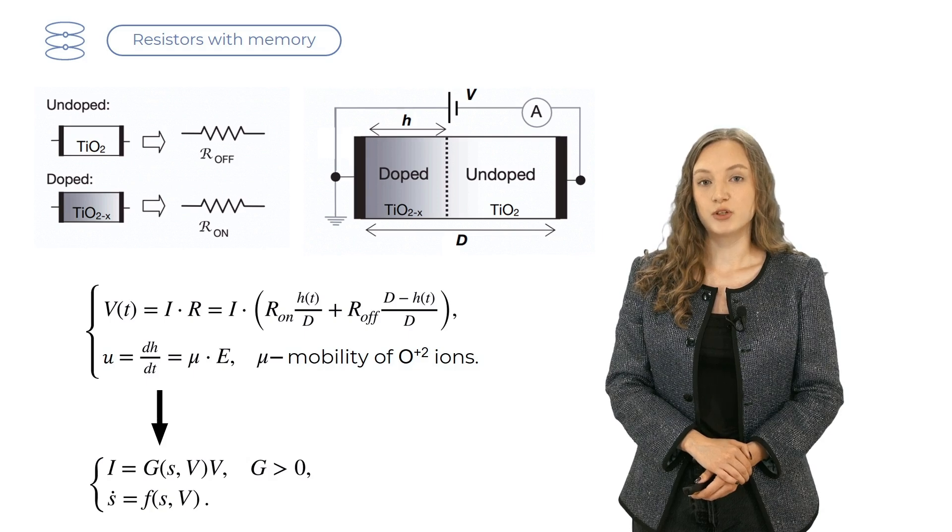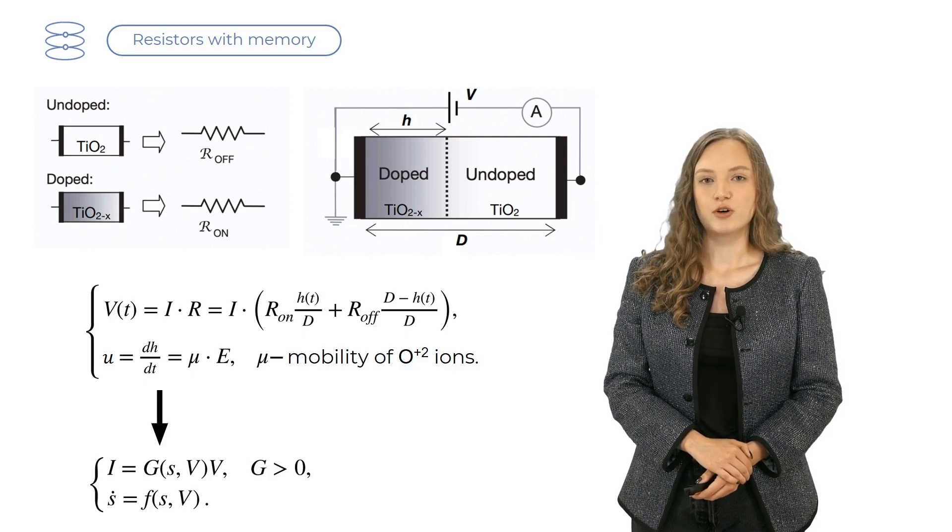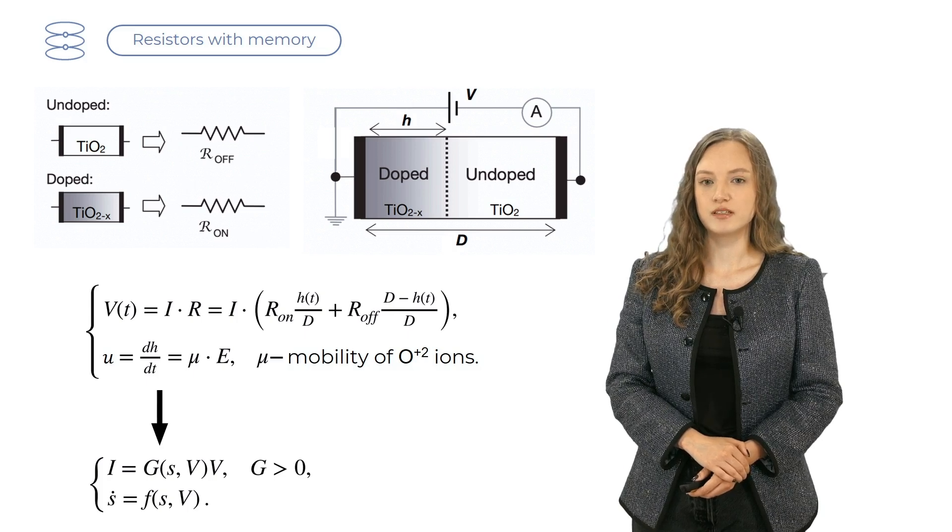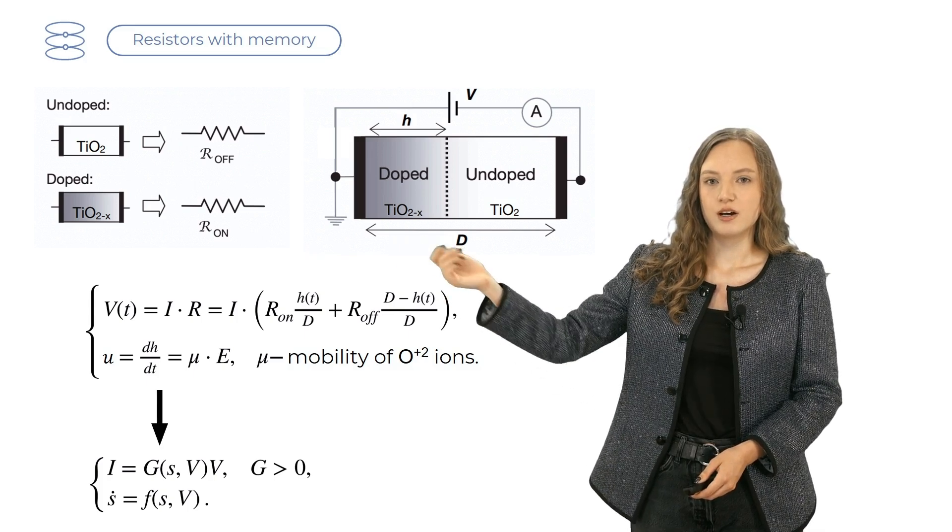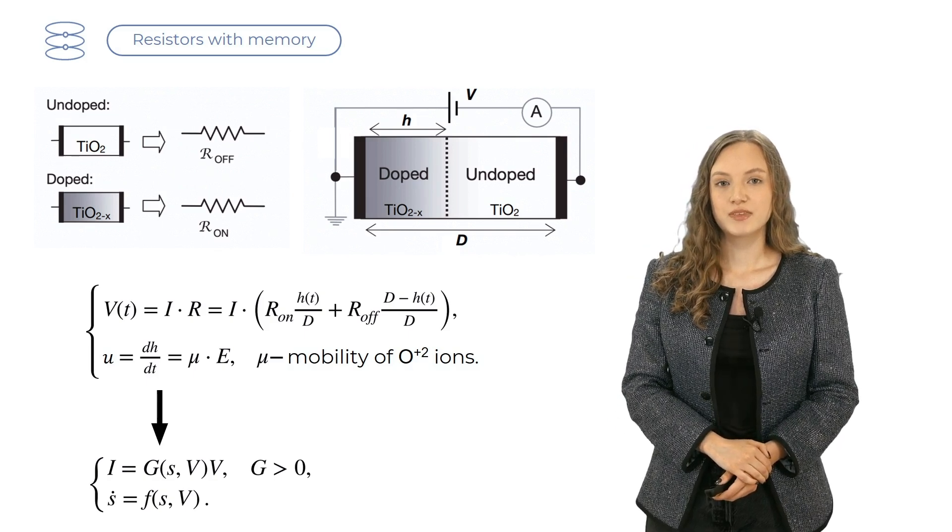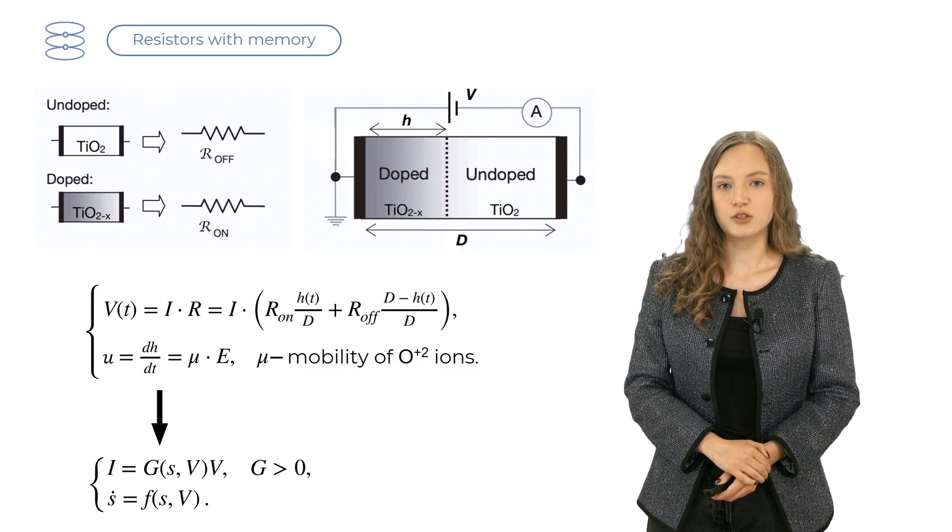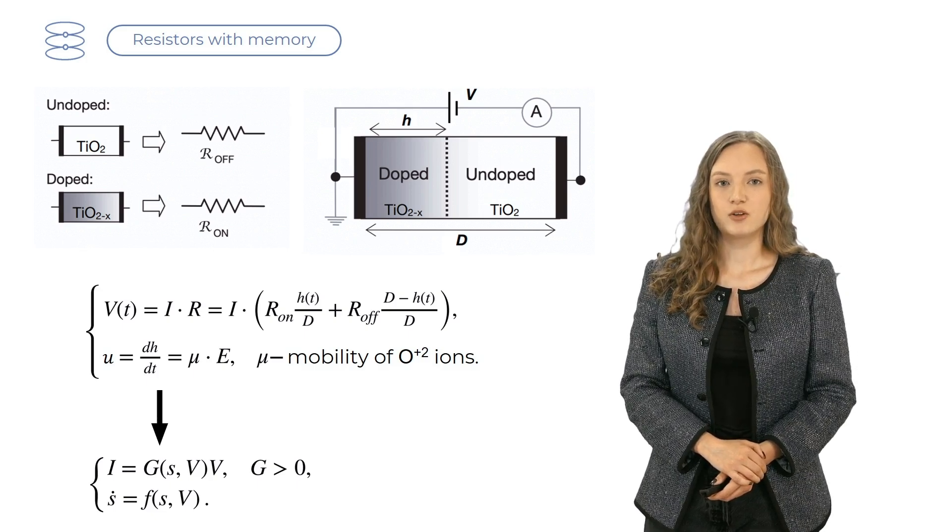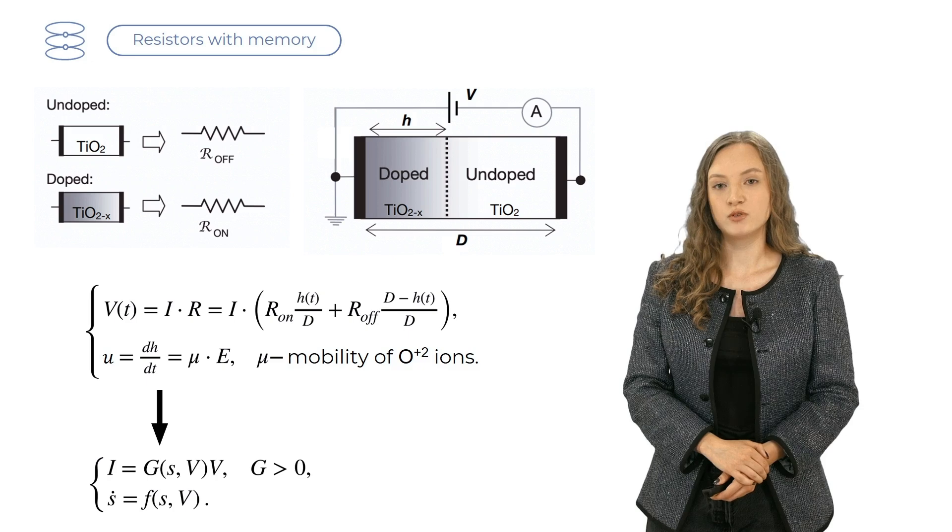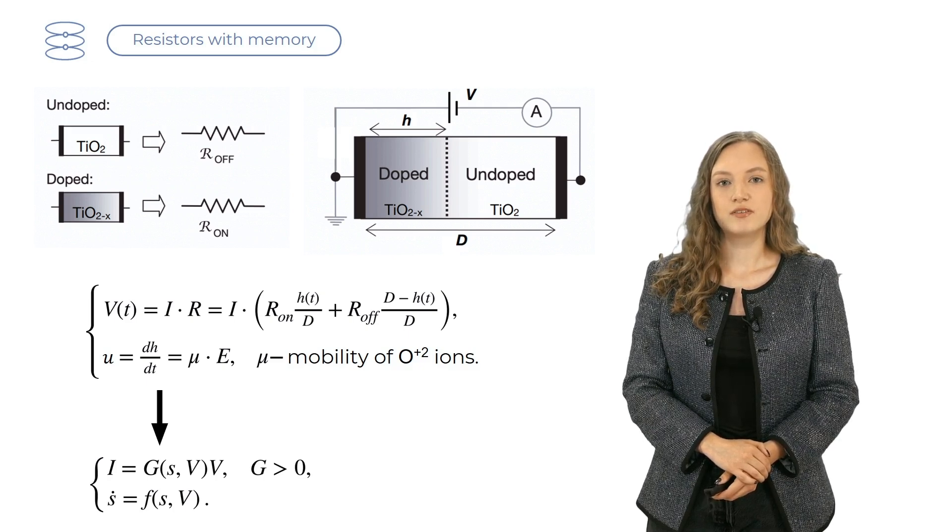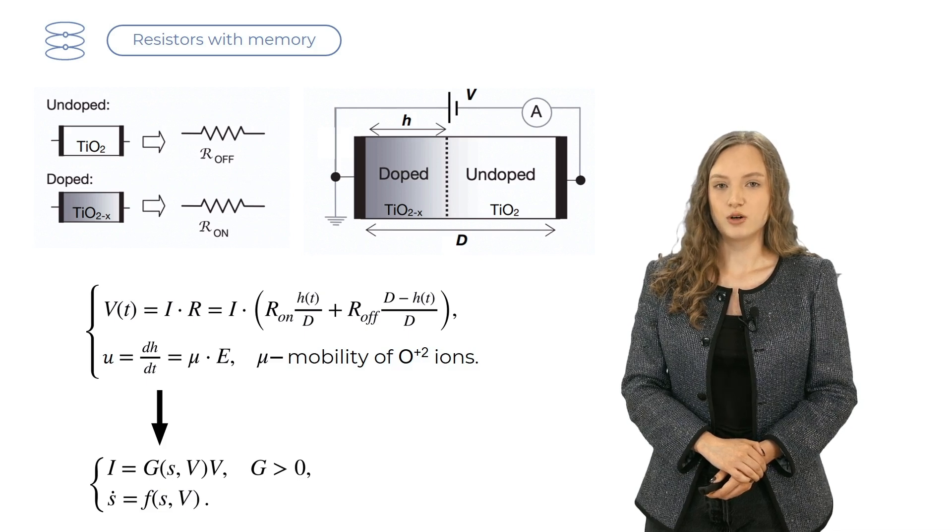Once we apply some non-zero voltage V, some of the oxygen atoms leave titanium oxide, creating a zone of some thickness H, which becomes doped with oxygen ions. This doped zone now has some free charges, because having lost one oxygen atom, titanium oxide molecule has two unbound valence electrons. Hence, the resistance of the zone is significantly lower than R_off. We'll call it R_on.